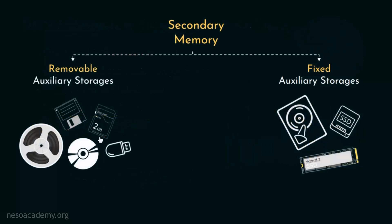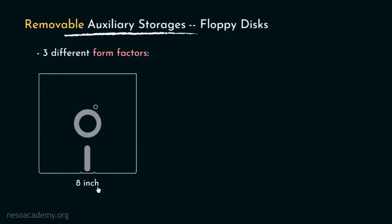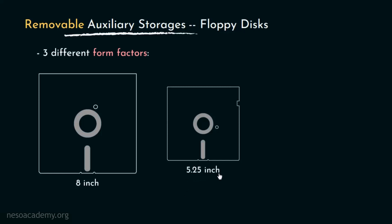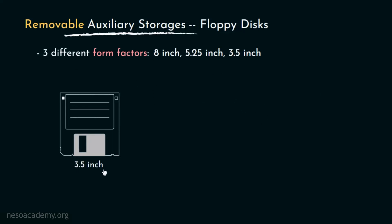The next type of removable auxiliary storage is the floppy disks. Commercially debuted in the year 1960, these used to come in three different form factors: the 8-inch floppy disk, thereafter the 5.25-inch variation, and finally the 3.5-inch floppy disks. The 3.5-inch floppy disks became very popular, and their storage capacity used to range from 1.2 megabytes to 1.44 megabytes. A floppy is a type of disk storage composed of a thin flexible disk of a magnetic storage medium in a square or nearly square plastic enclosure lined with a fabric that removes dust particles from the spinning disk.